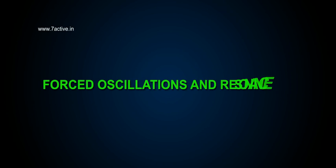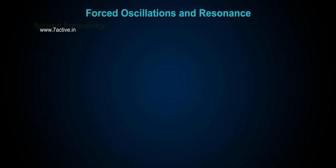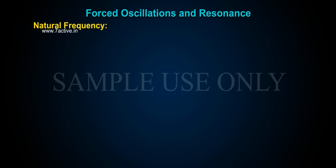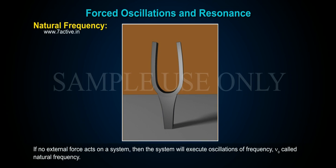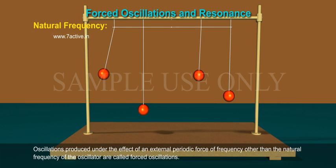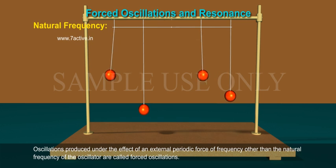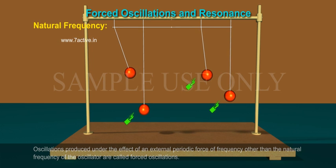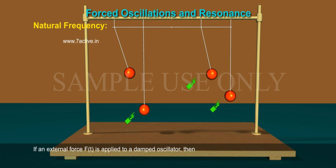Let us discuss forced oscillations and resonance. If no external force acts on a system, the system will execute oscillations of frequency ν₀, called the natural frequency. Oscillations produced under the effect of an external periodic force of frequency other than the natural frequency of the oscillator are called forced oscillations.